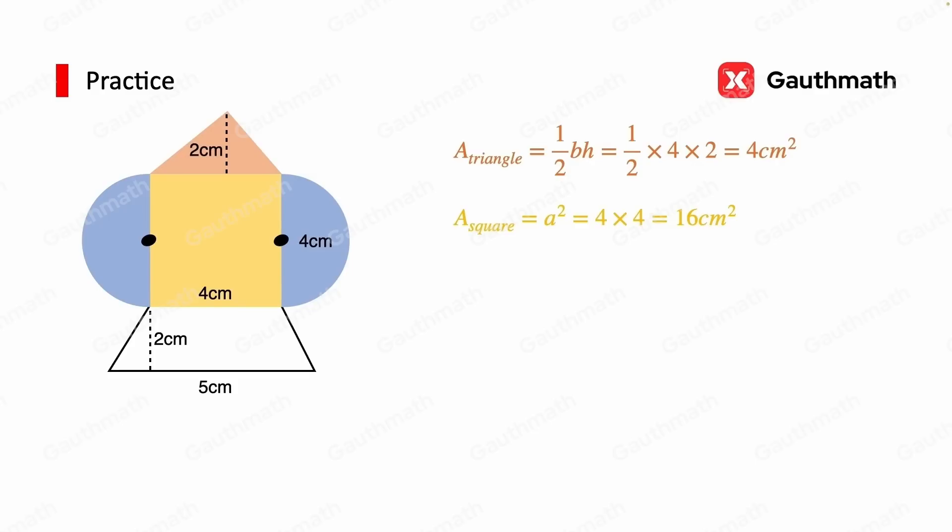Now the two semicircles on the left and right have a diameter of 4cm, which means a radius of 2cm. Two sectors that have the same radius and both have 180 degrees of central angle equals to a full circle. Therefore, we directly use the circle formula of πr², πr² equals 4π cm².